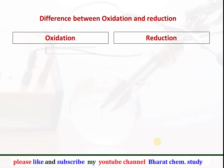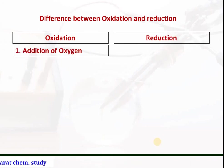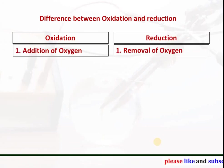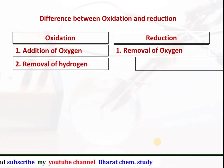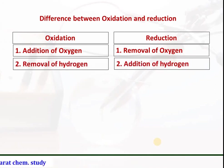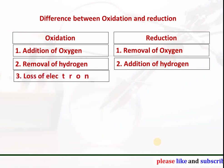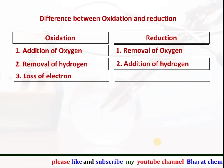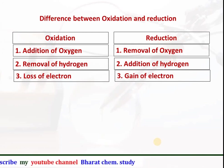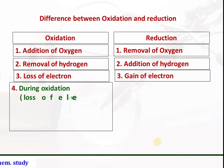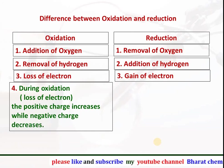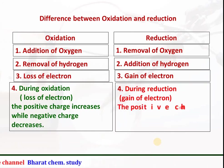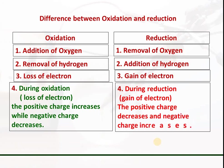Difference between oxidation and reduction: In oxidation, addition of oxygen takes place; in reduction, removal of oxygen takes place. In oxidation, removal of hydrogen takes place; in reduction, addition of hydrogen takes place. During oxidation, loss of electrons takes place and positive charge increases while negative charge decreases. During reduction, gain of electrons takes place and positive charge decreases while negative charge increases.